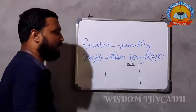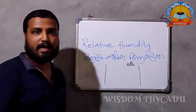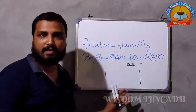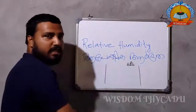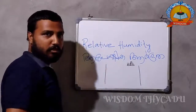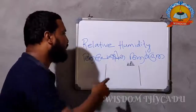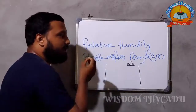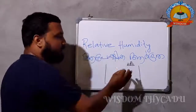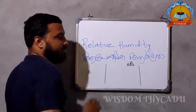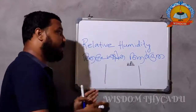At this temperature of 23 degrees Celsius, let's give an example. This temperature is Dusk. The relative humidity interacts with the atmosphere. It is a temperature interaction. How high are you feeling?